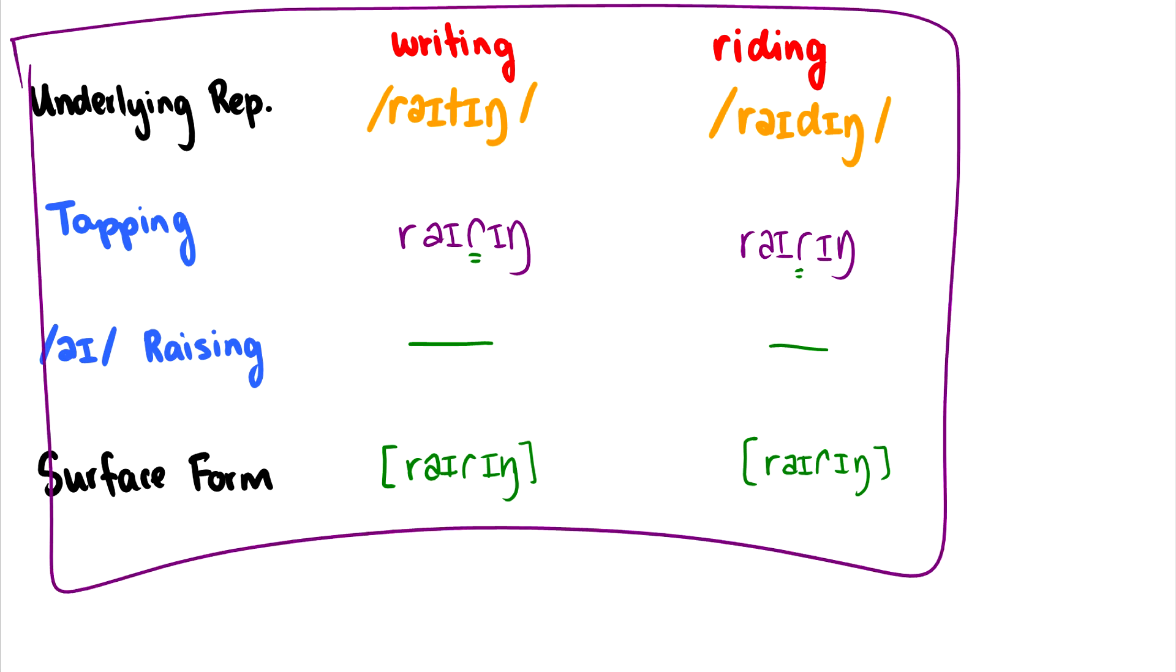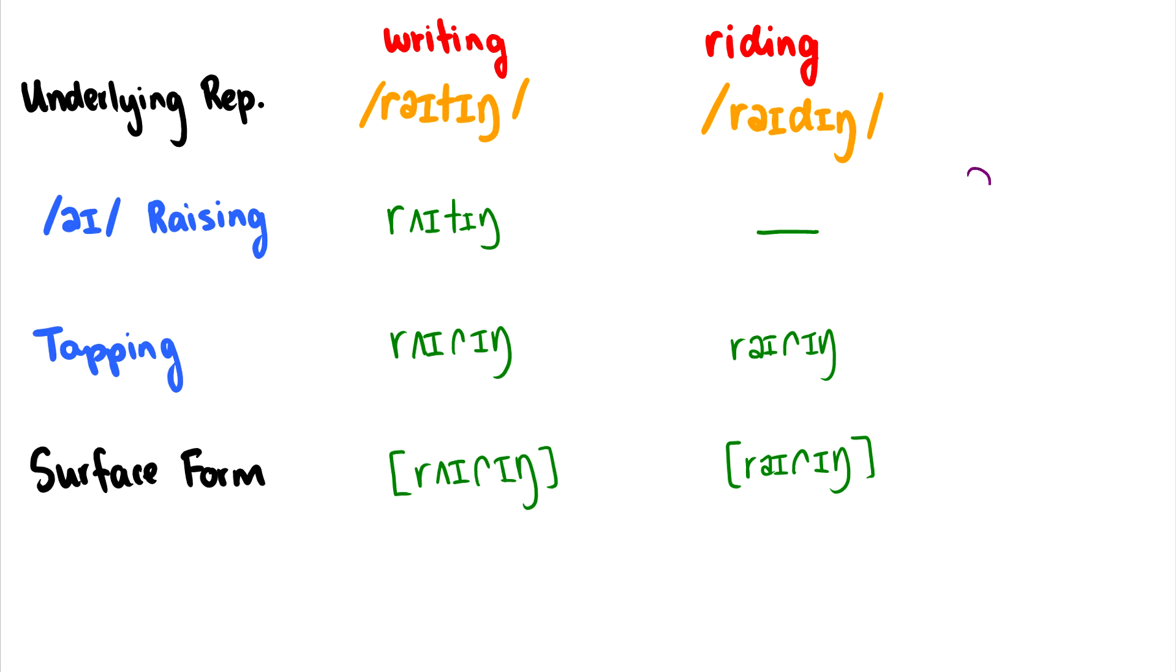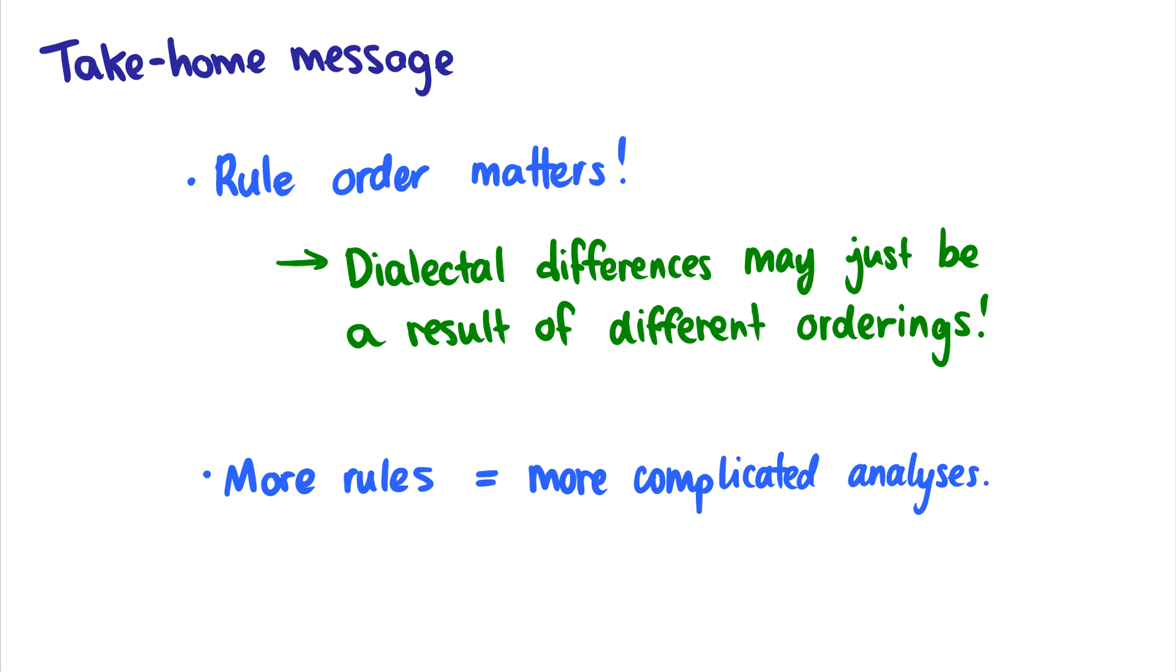Of course, it just so happens that there is no eye raising at all when we do the rules in this order. While Canadian speakers have this rule ordering for their pronunciation with raising and tapping. So kind of the take-home message of this is that rule order matters. And that dialectal differences may just be a result of different rule orderings.